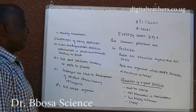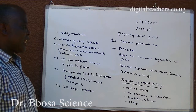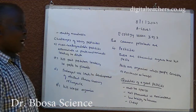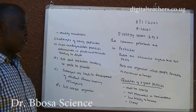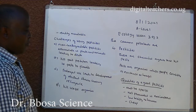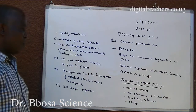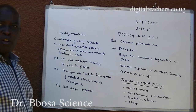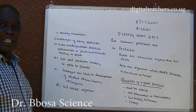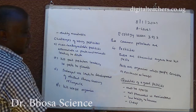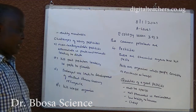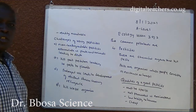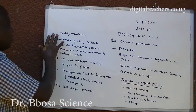Four: pesticides. These are chemical agents that kill pests. Pests are organisms people consider a nuisance or harmful. Qualities of good pesticides: must be specific, killing only the intended pests; not persistent in the environment; should have no toxicity to humans; should be cheap and readily available.